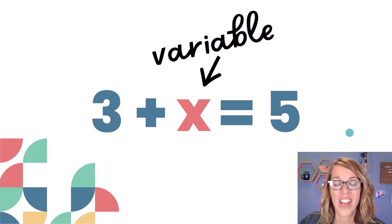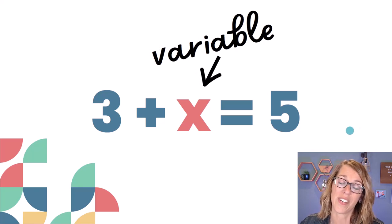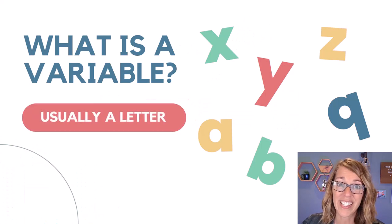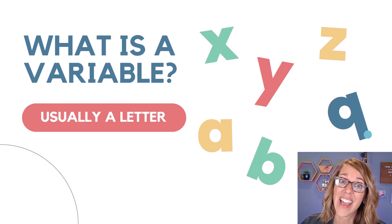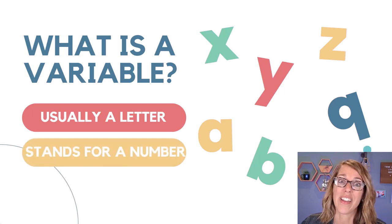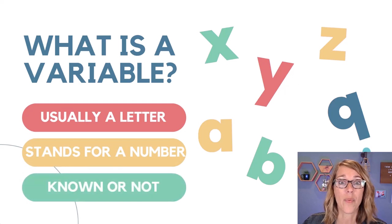So the variable just represents a number that we're either trying to figure out or one that we can plug in for different values. Variables are typically a letter. In almost all the cases as you're going through algebra, it's going to be like an X, a Y, or a Z. These letters also stand for a number, and that number could be either one that we already know that we get to plug in, or one that we are solving for.